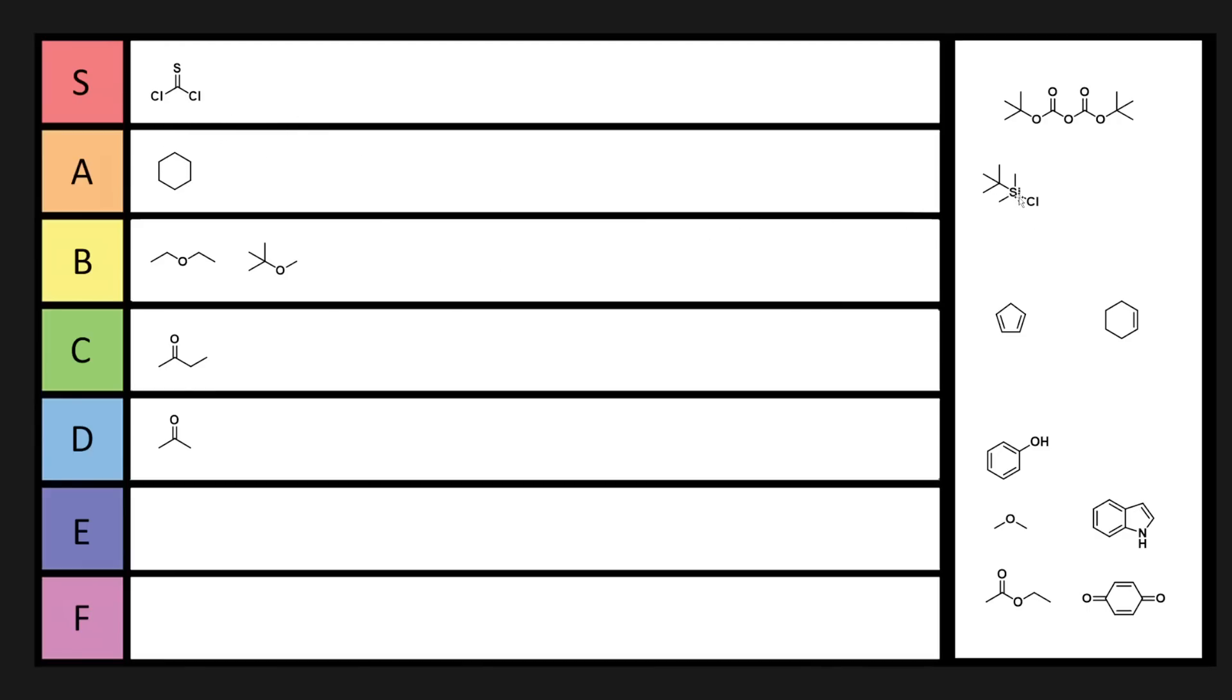Then we have some other ones like TBS chloride. So TBS chloride, you look at it and you know that that's toxic. It's got an Si-Cl bond. It's going to be making hydrochloric acid, but it smells so damn good. It's got this wintergreen minty refreshing smell that tert-butyl compounds tend to have in general. But it's also like you probably shouldn't be smelling silyl chloride. So I'm feeling like this has probably got to be A tier.